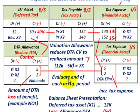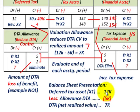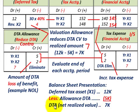Let's look at our balance sheet presentation. You would have your deferred tax asset — for year X1 that's $12,000 — then subtract the allowance for the deferred tax asset, the contra account, of $5,000. So the net amount of your deferred tax asset — the net realized amount — is $7,000.